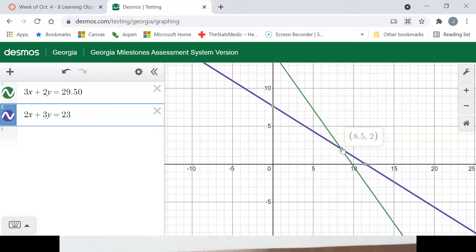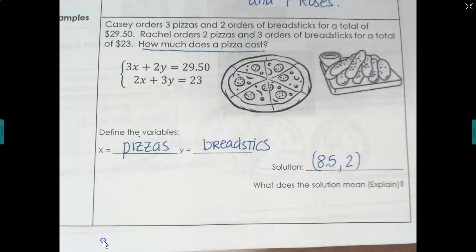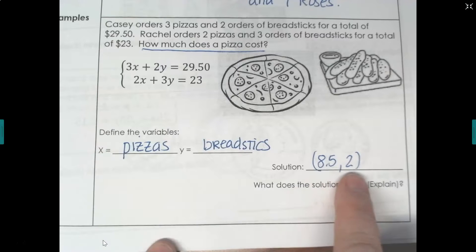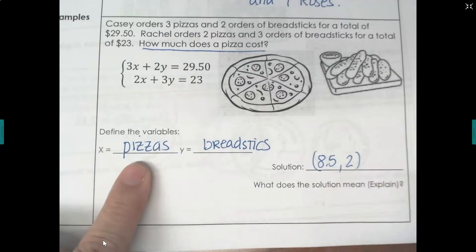The question was how much does each piece of pizza cost? So we're actually talking about some money here and money has decimals. It has pennies. It doesn't have to only be a whole number. So we want to know how much each pizza costs. Pizzas are the x value. So let's look. So we have 8.5, 2.